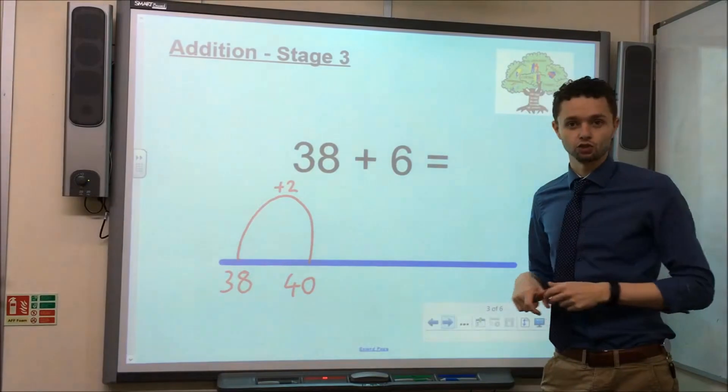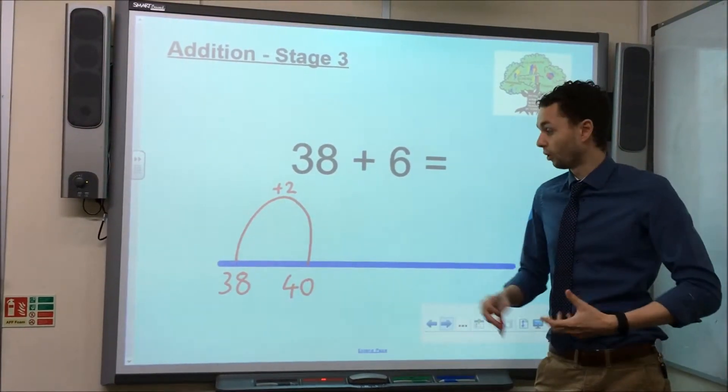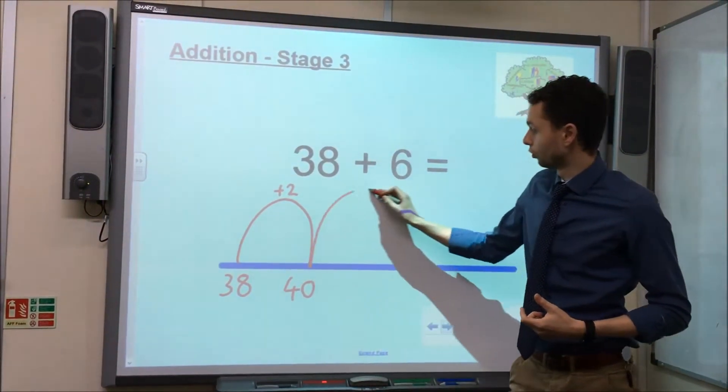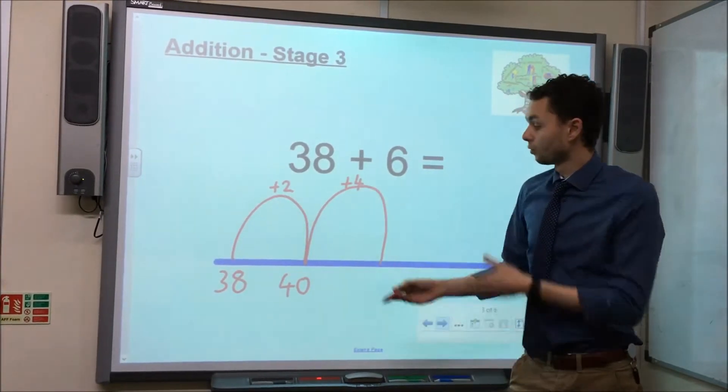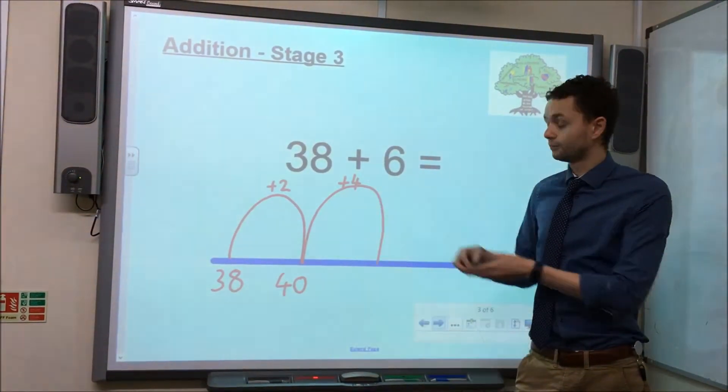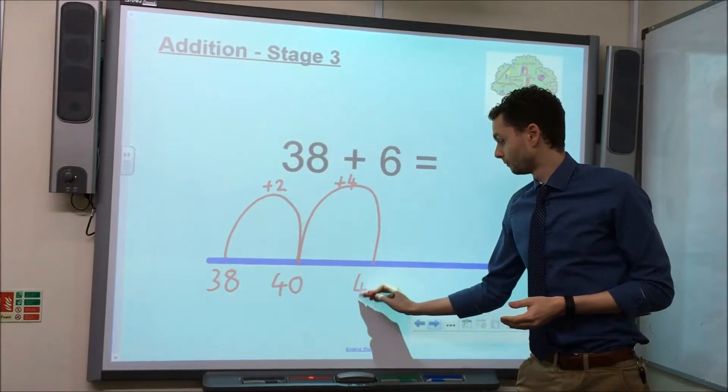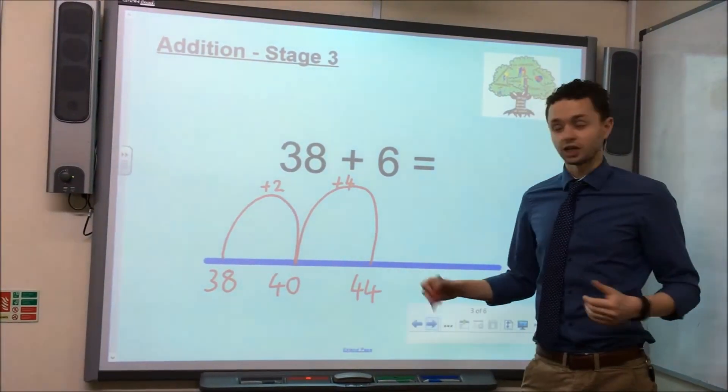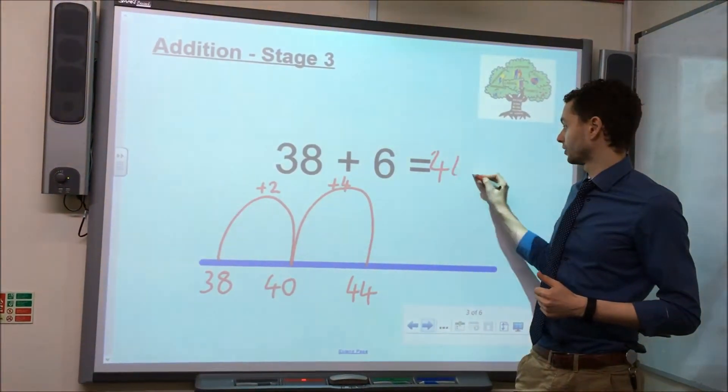That means my next jump needs to be of 4 to find the answer. So, we would draw one more jump of plus 4. We would look at 40, add 4, which gives us 44, which is the answer to our calculation.